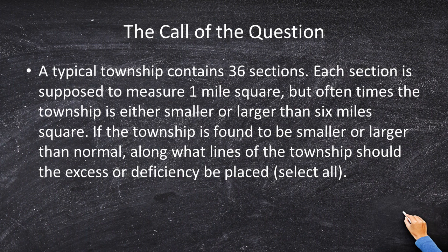If the township is found to be smaller or larger than normal, along what lines of the township should the excess or deficiency be placed? You have to select all that apply — it could be one or it could be all four.